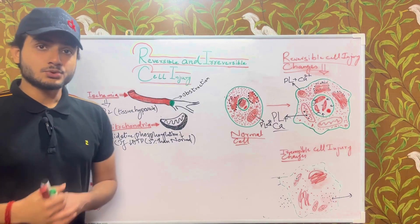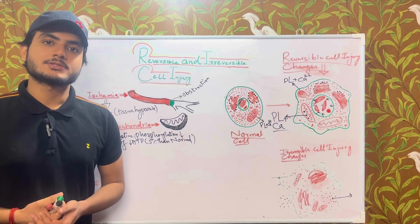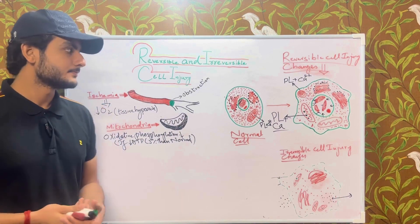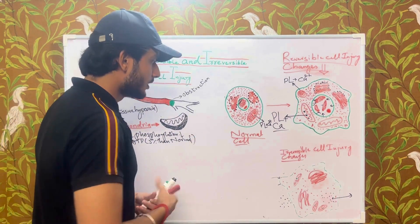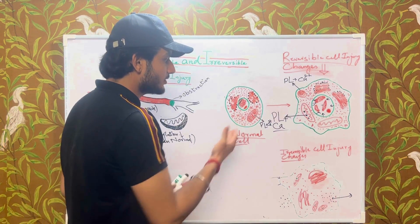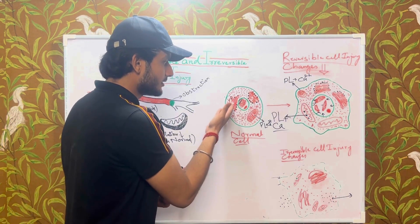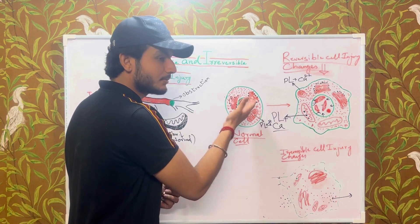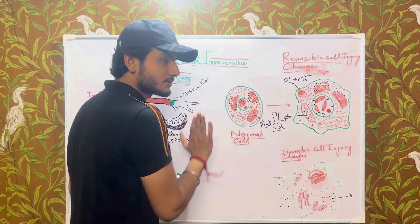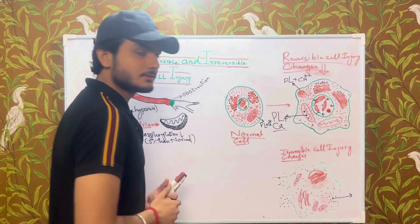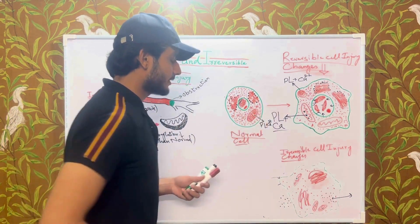A question must arise in your mind: why does the cell start swelling? Let's understand it through a diagram. This is the normal cell — this is the nucleus, these are the endoplasmic reticulum with ribosomes attached, this is the mitochondria, this is the cytosol, and this is the cell membrane.